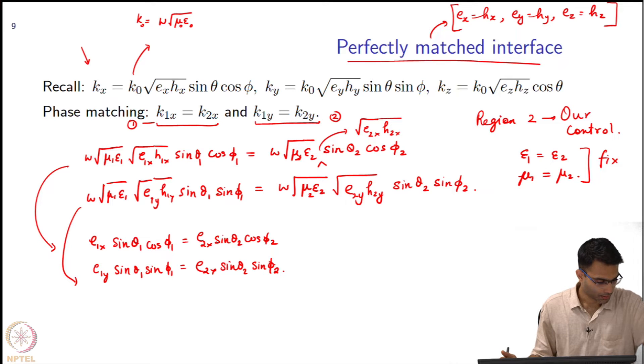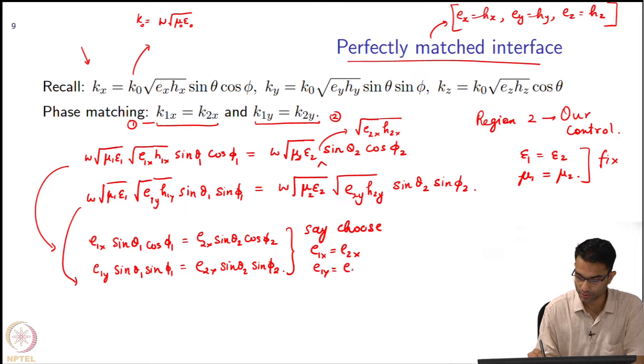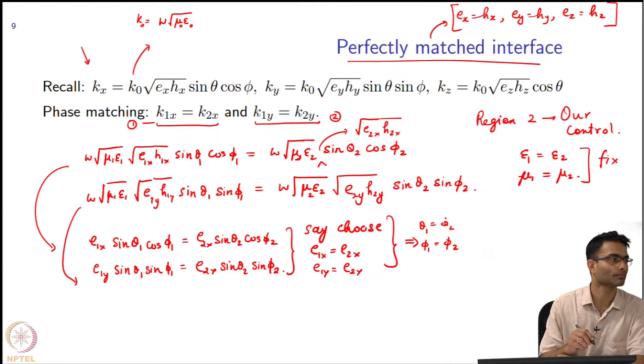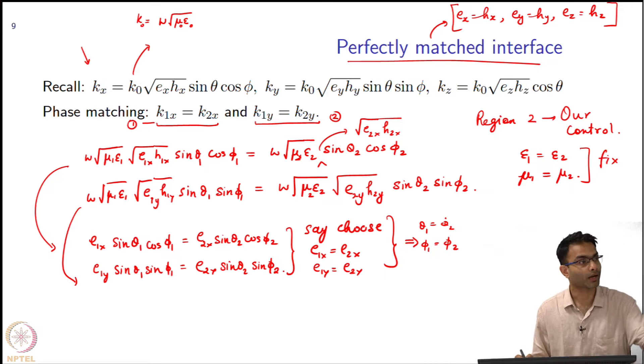Now, let us go back over here. Supposing we make a further simplification, choose e1x equal to e2x and e1y equal to e2y. That is one way of making sure. What will this together imply? Theta1 equals theta2, phi1 equals phi2. But I have not said anything about ez yet.